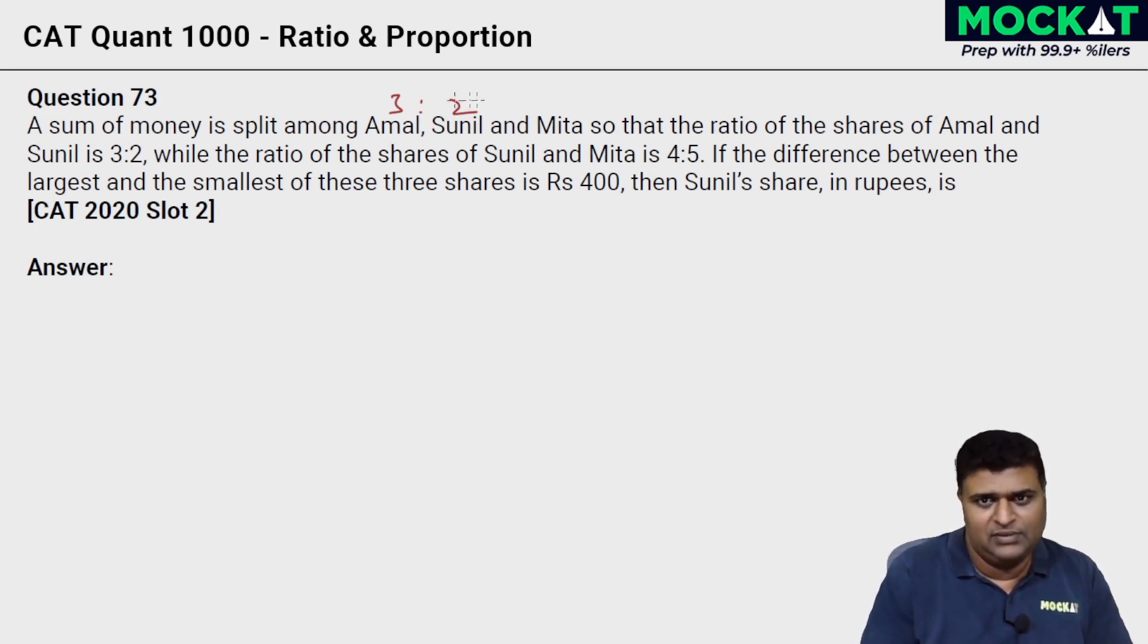If this was 4, it's helpful. So this is 3 is to 2, A, S, and M. 3 is to 2, I can write it as 6 is to 4. That makes life easy for me. I multiply with 2, and when I know Sunil is 4 parts, then Mita is going to be 5 parts.